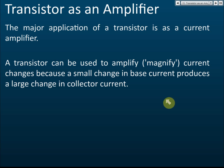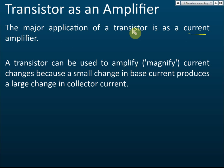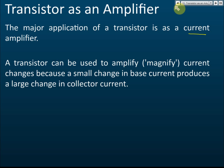The major application of a transistor is as a current amplifier. I want to stress that this is a current amplifier — it is used to increase current, not voltage. A transistor amplifies, meaning it magnifies current changes, because a small change in the base current produces a large change in collector current.